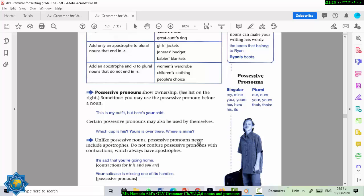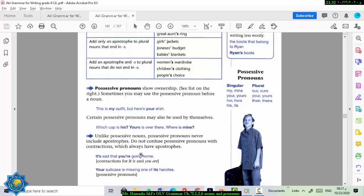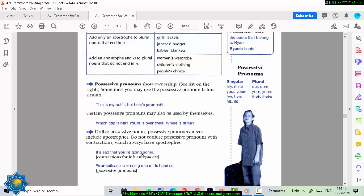Unlike possessive nouns, possessive pronouns, they never include apostrophes. Never have an apostrophe. Don't confuse possessive pronouns with contractions. Like here. It's sad that you're going home. It's means it is sad that you are going home. That's here not possessive at all. That's contraction for it is and you are. Your suitcase is missing one of its handles. It's here possessive because it refers to the suitcase.